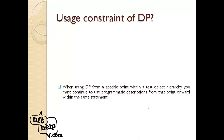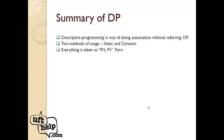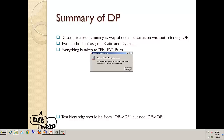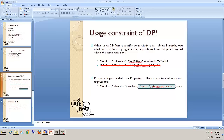Summary: Descriptive Programming is the smartest way of doing automation without using the object repository. Use cases include: OR not ready, OR size increasing, read-only OR, dynamic object properties, or similar types of objects. Two implementation methods — Static uses property name-value pairs directly; Dynamic requires creating a Description.Create() object. Get property name-value pairs using Object Spy and Copy to Clipboard. Key constraint: you can move from OR to DP but not back. All property names are treated as regular expressions. For more help, visit ufthelp.com.